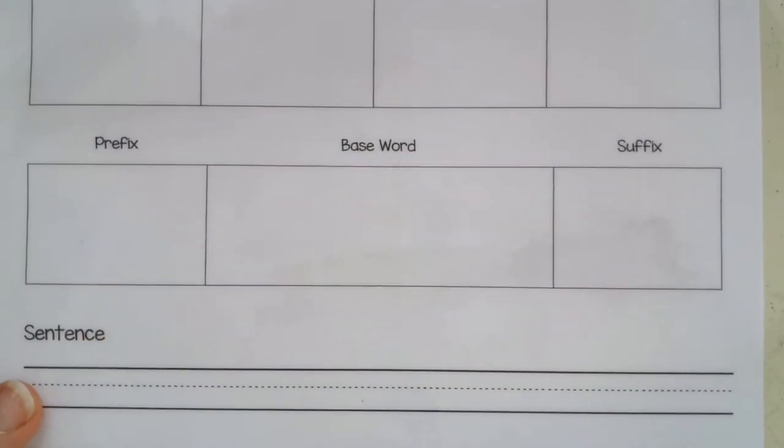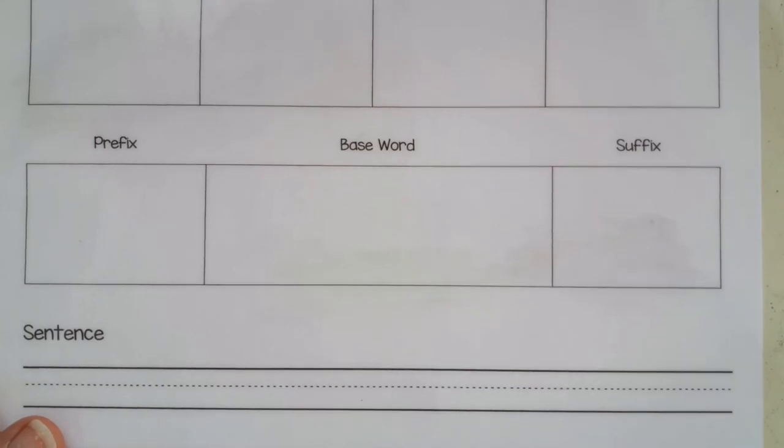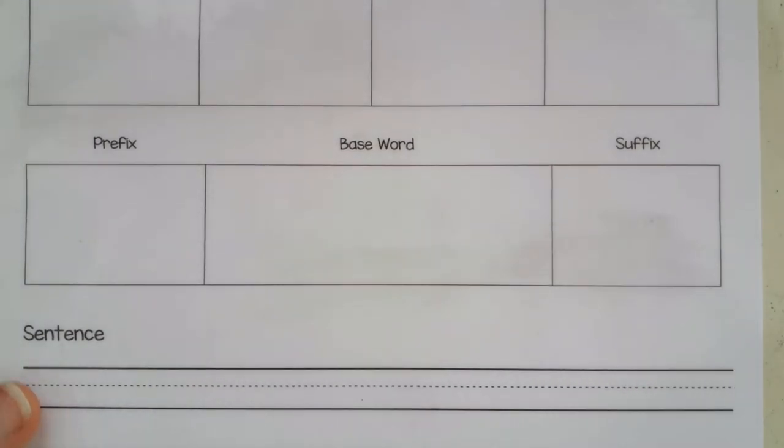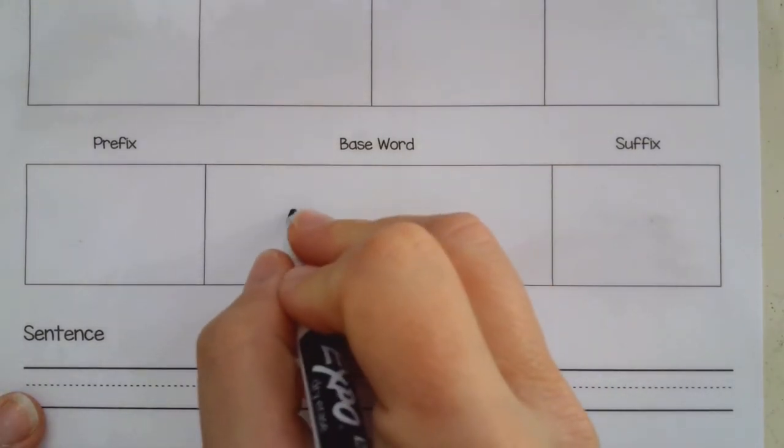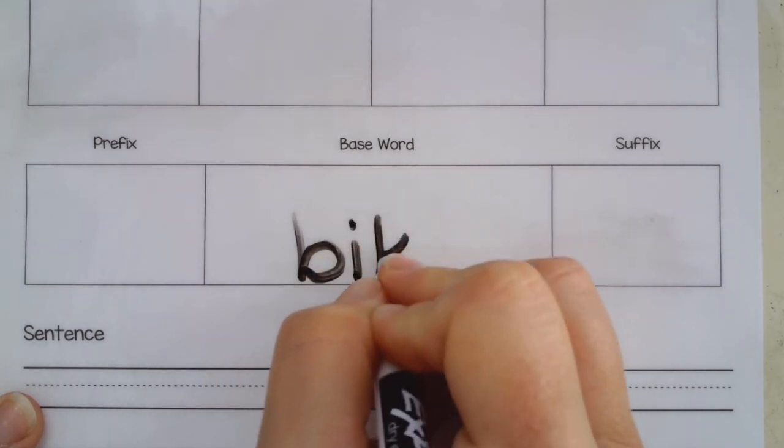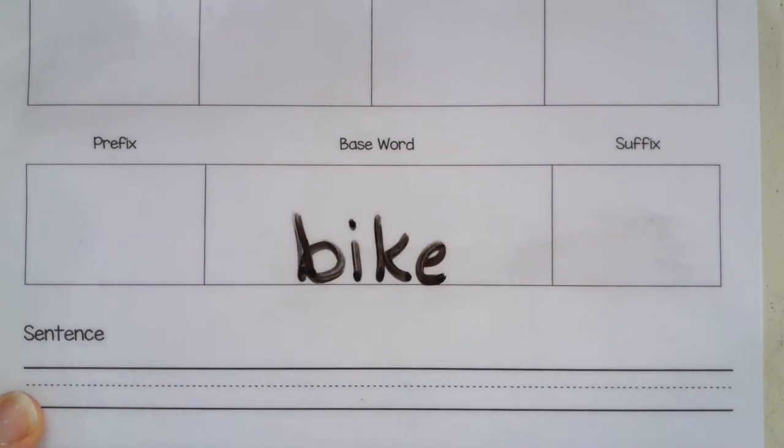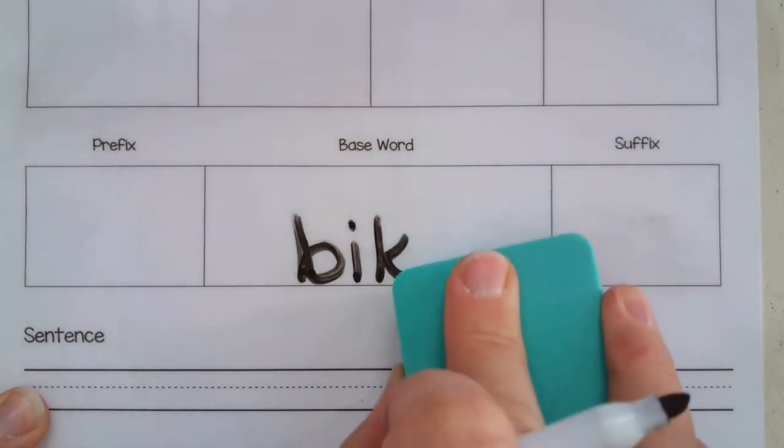Okay now if you're doing a word like biking you would say what's the base word? The base word is bike. So they write bike and then you can remind them okay we have bike we're adding ing which is a vowel suffix. What do we need to do? And they can say oh I have to drop the e and they can just simply erase it.